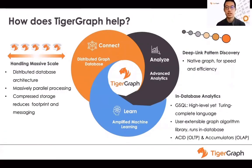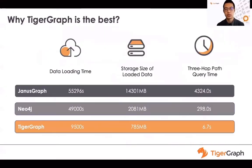TigerGraph helps organizations get insights from their data in three capabilities. Connect: the platform's core is a distributed graph database with high-performance storage and computation. Your data is automatically partitioned into multiple nodes, and TigerGraph keeps track of each node. Analyze: TigerGraph's deep-linked analytics means it can traverse millions of connections in a fraction of a second and reveal hidden relationships among data to enhance machine learning. Learn: TigerGraph supports GSQL, a Turing-complete query language, and also provides an extensive graph algorithm library that can work without connecting other tools.